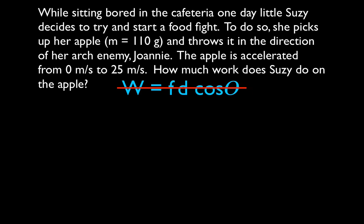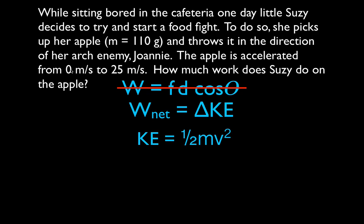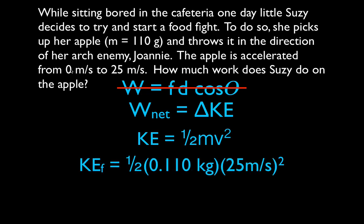Remember, the work-energy theorem says the net work equals the change in kinetic energy. We have the mass and the velocities, so we can calculate the change in kinetic energy. Since the initial kinetic energy is zero, we just calculate the final kinetic energy: KE final = one-half times m times v final squared. That's one-half times 0.110 kilograms times 25 meters per second squared, which gives a change in kinetic energy of 34.3 joules.